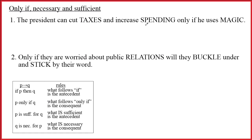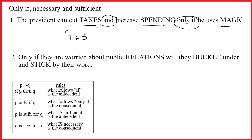First sentence: 'The president can cut taxes and increase spending only if he uses magic.' The logical words are 'and' and 'only if.' T and S clearly go together in parentheses. Only if is going to be the main connective. The rule for only if says that whatever follows it is the consequent — the part that comes after the arrow. So this is just (T∧S)→M. Whatever follows only if is the consequent. Very simple sentence.